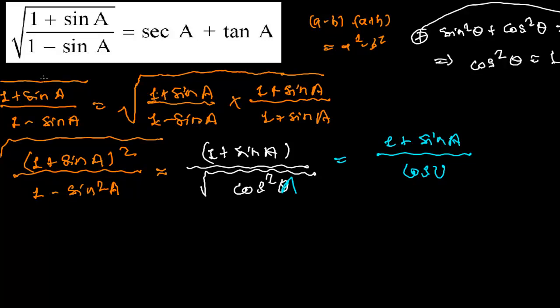Okay so I can write now cos A not theta, yeah this is cos A and this is also cos A. Now I'm going to separate individually like 1 upon cos A.